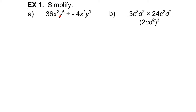36x squared y to the exponent 6 divided by negative 4x squared y cubed. We're dividing, so we need to use our rules for dividing powers with the same base. We'll go piece by piece. 36 divided by negative 4 is negative 9. x squared divided by x squared — dividing powers with the same base means we subtract the exponents. 2 minus 2 is 0.